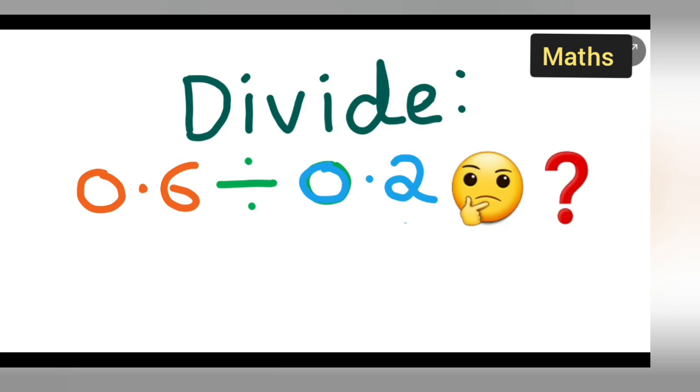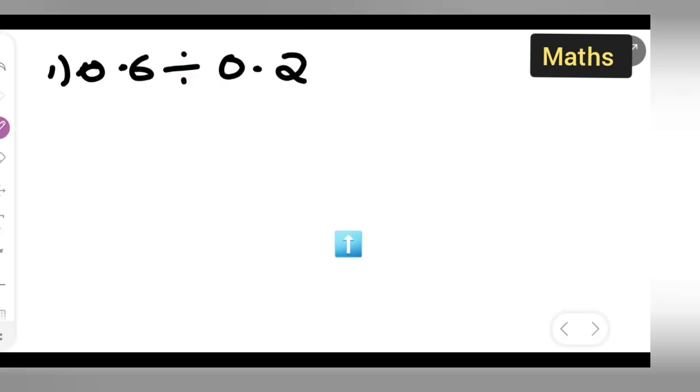Welcome to today's class of mathematics. Today's question is divide 0.6 divided by 0.2. Let's see how to divide 0.6 divided by 0.2. Many of you will find it difficult because of the decimal point, especially when you see the decimal sign, but there is a trick for this.